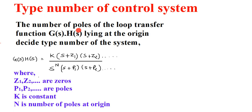The number of poles of the loop transfer function G(S)H(S) lying at the origin defines the type number of the system. Here the loop transfer function G(S)H(S) equals K times (S+Z1)(S+Z2)... in the numerator, and S^N (S+P1)(S+P2)... in the denominator, where Z1 and Z2 are zeros, P1 and P2 are poles, K is a constant, and N is the number of poles at the origin.